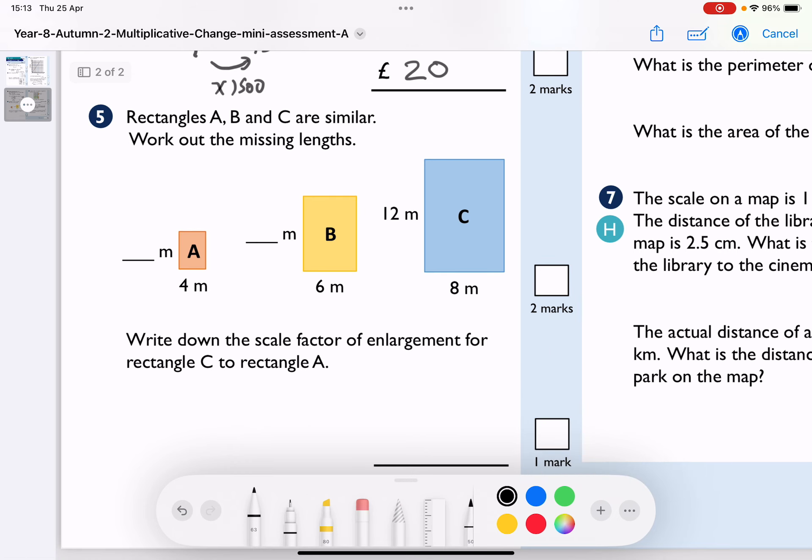Question 5. Rectangles A, B and C are similar. Work out the missing lengths.